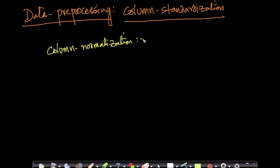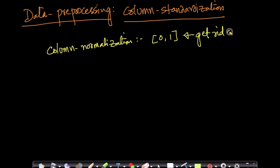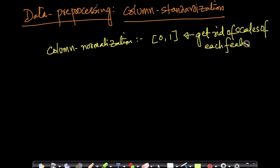In column normalization, we took each column and compressed all of the values between 0 to 1, so as to get rid of the scale of each feature. We created our own scale where all the values lie between 0 to 1 — that's what column normalization did.